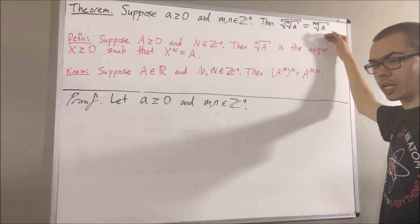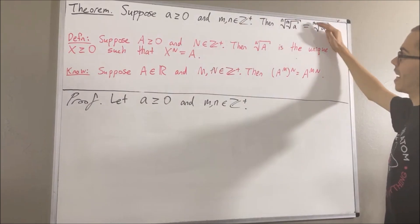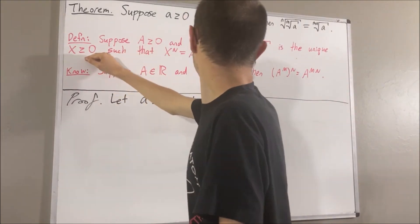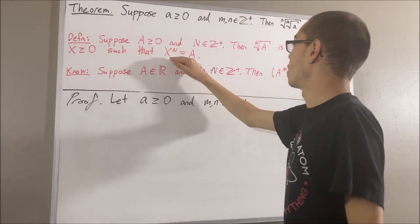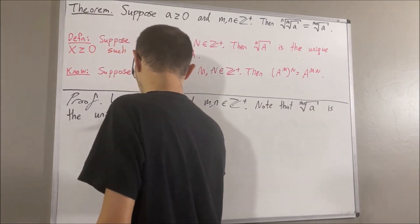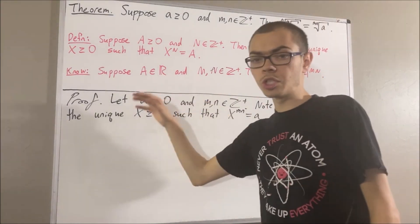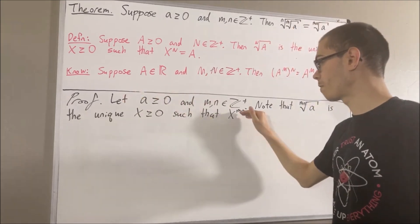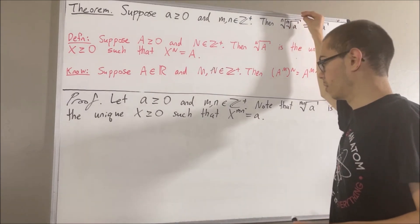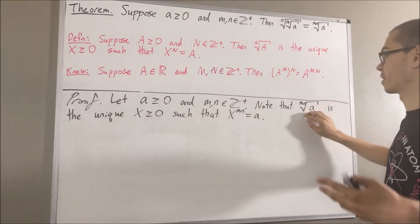So how are we going to show that these two expressions are equal? Well, from the definition, the m times nth root of a is the unique real number greater than or equal to zero such that when we raise it to the power of m times n, we get a. We're going to show that if we take the nth root of the mth root of a and raise it to the power of m times n, we also get a. And since this is unique, we must have that these two expressions are equal.